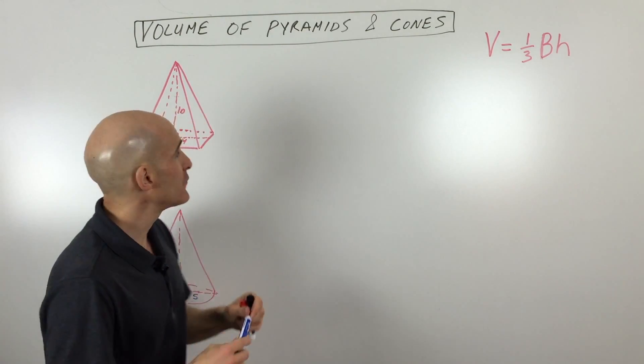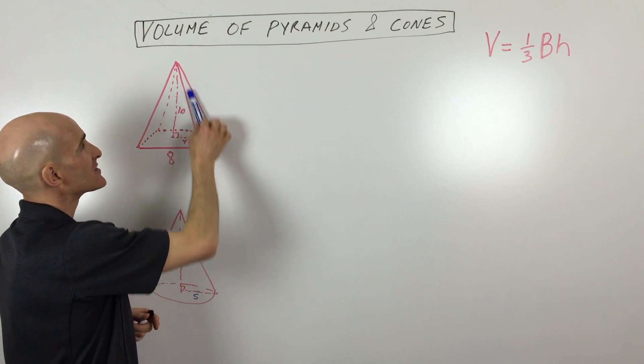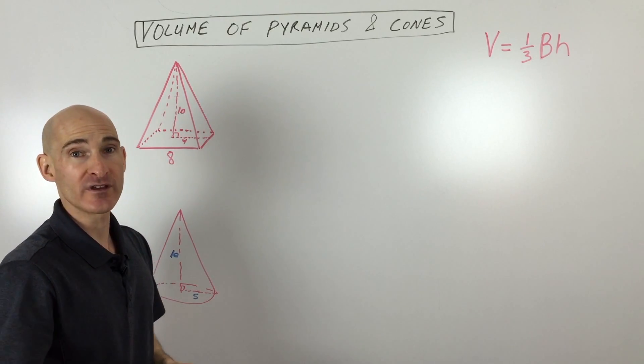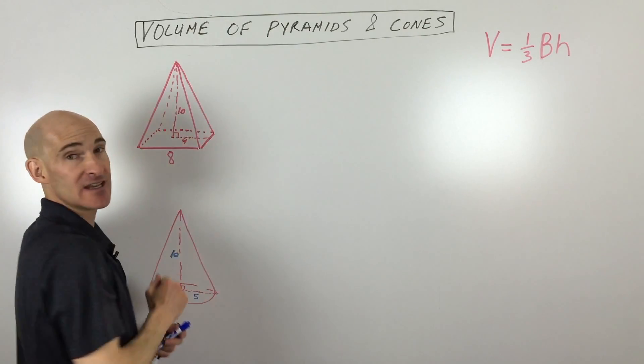Now you don't want to get confused. When you do surface area, you're using the slant height. You can usually use the letter L for the slant height. That's the angled height or the leaning height.